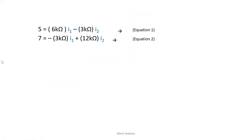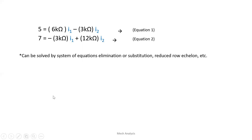Summary of both equations: First equation: 5 = 6kΩ·I1 − 3kΩ·I2. Second equation: 7 = −3kΩ·I1 + 12kΩ·I2. This system of equations can be solved by elimination, substitution, reduced row echelon form, or any preferred method.